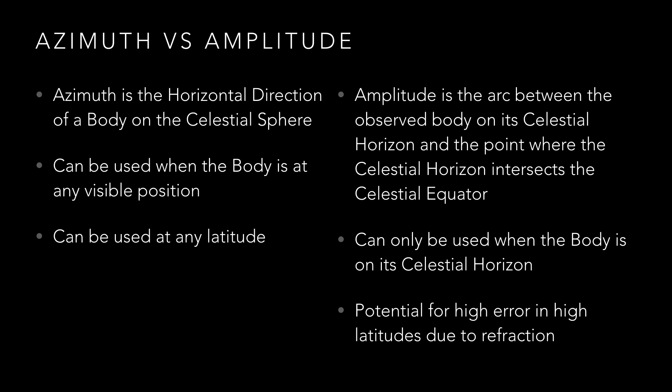The amplitude method is possible because when a body is on the celestial horizon its zenith distance is 90 degrees. Therefore we can use Napier's rules to calculate the amplitude angle, and practically this results in a much easier and faster calculation.